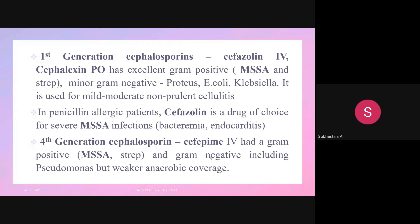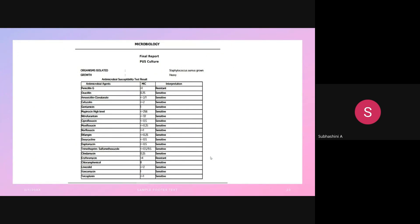First-generation cephalosporins — cefalexin and cefazolin — have excellent gram-positive coverage for MSSA with minor gram-negative coverage, and are used for non-purulent cellulitis; cefazolin is the drug of choice for MSSA. Fourth-generation cephalosporins — cefepime and cefpirome — are also good choices for MSSA. In this pus culture showing Staphylococcus aureus with oxacillin-sensitive, we can confirm it is MSSA.